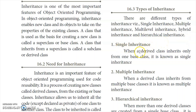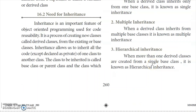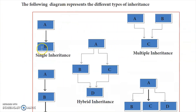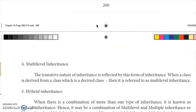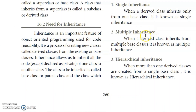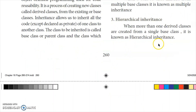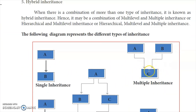Going ahead to explain each type with corresponding diagrams and explanations for easier understanding. In single inheritance, one base class has one derived class — this is called single inheritance. In multiple inheritance, a derived class is derived from two or three base classes.